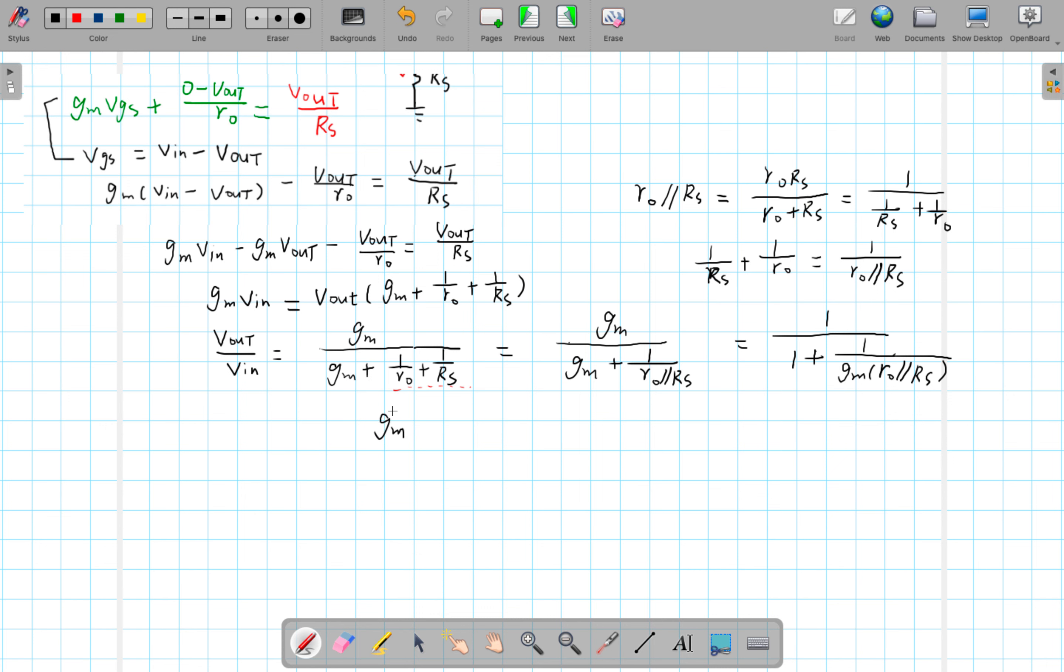Now the gm represents the amplification capability of the MOSFET transistor. So if the gm times R0 in parallel with Rs is large, then this term goes to 0. So what that means is the gain, the voltage gain, can be approximated as 1 over 1 plus 0. That would be a unity gain.